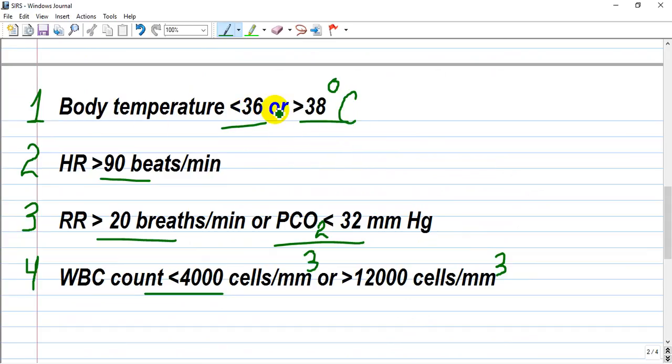Once again, the criteria are: fever or hypothermia, heart rate more than 90 beats per minute, respiratory rate more than 20 and PCO2 decreased due to hyperventilation, and white blood cells less than 4,000 or more than 12,000.